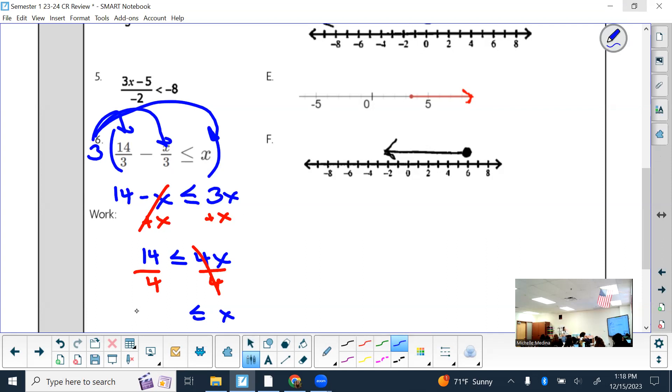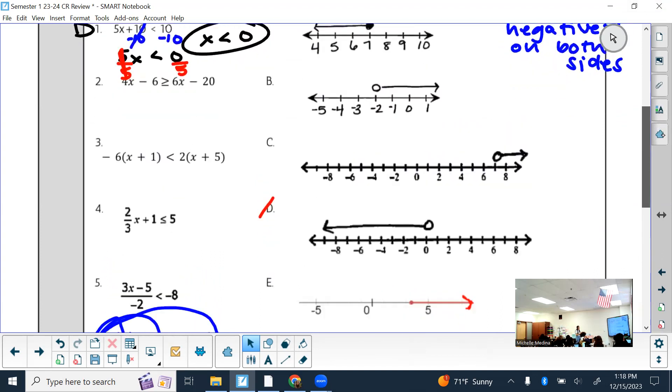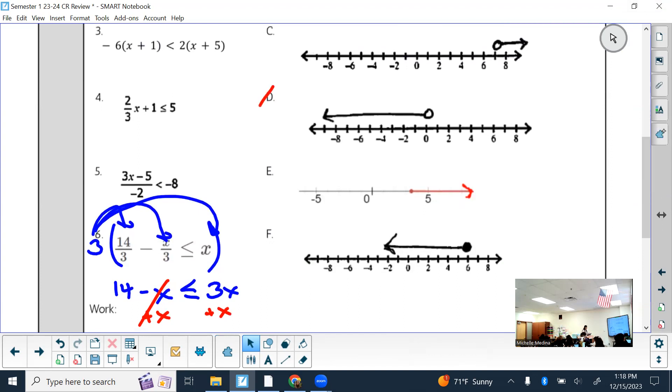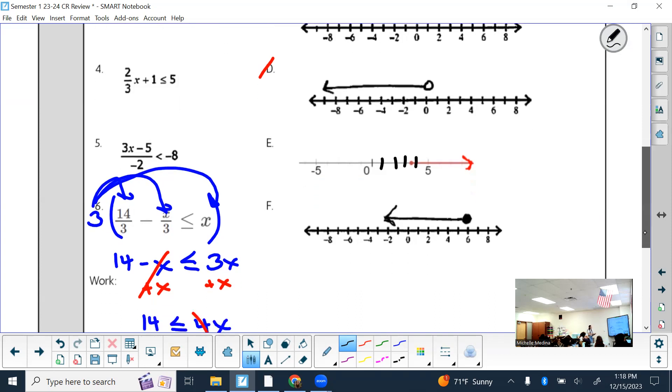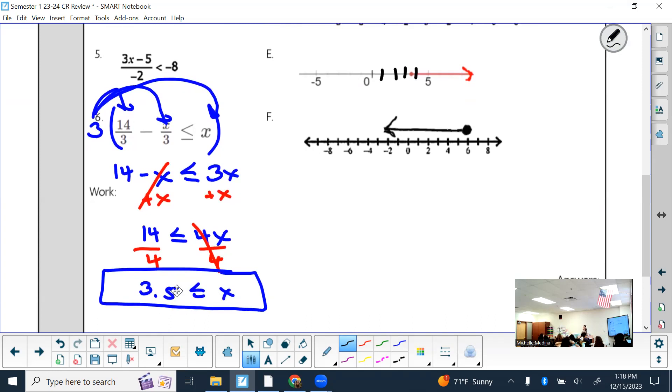So then I need to find what kind of circle, open or close. A closed one on the 3.5. So definitely not F. B was already eliminated. Definitely not C. Definitely not D. Definitely not A. So let me look more closely at E then. We got one, two, three, four. So yeah, that's a closed circle at three and a half pointing to where the x's would be bigger than three and a half, which is the same thing. Any problem with that. Does that make sense? Yes.